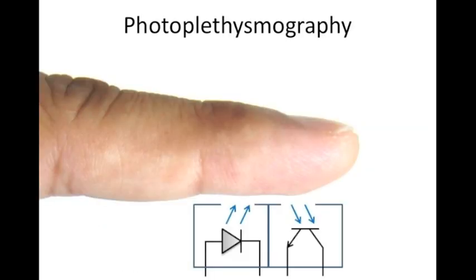This setup that we have is called photoplethysmography. And in this case, your infrared light comes in on the bottom of your finger, and your sensor measures the amount of light that comes back.